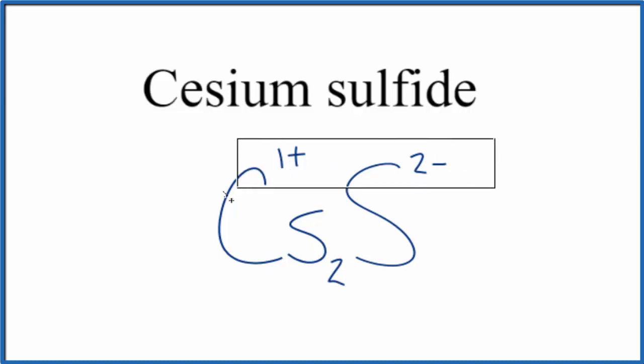So this is the formula for cesium sulfide. Cs2S. This is Dr. B, and thanks for watching.